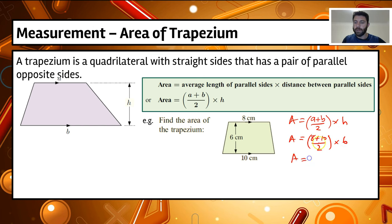So if we calculate our brackets, we've got 18 divided by 2, multiplied by 6. So our area equals 9 times 6, so our area equals 54, and we've got centimeters, so we've got centimeters squared.